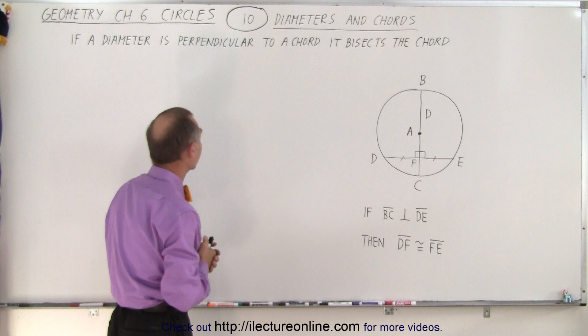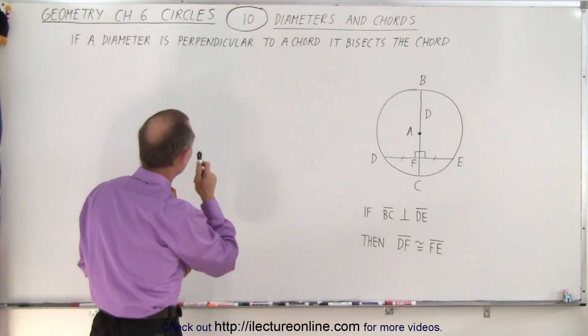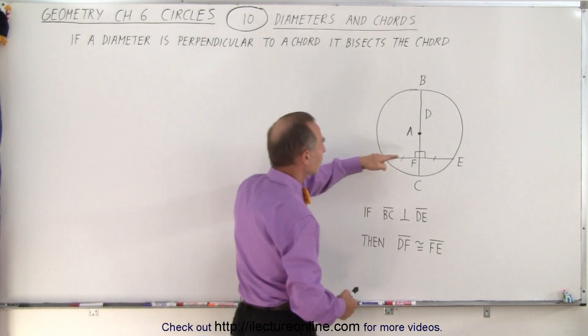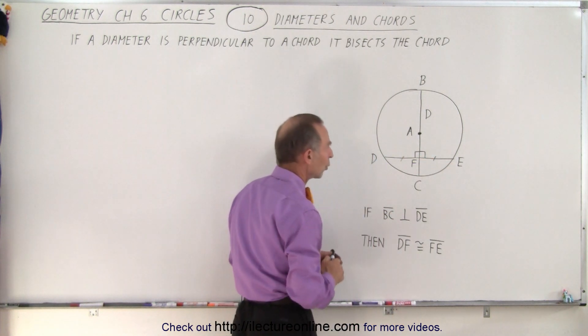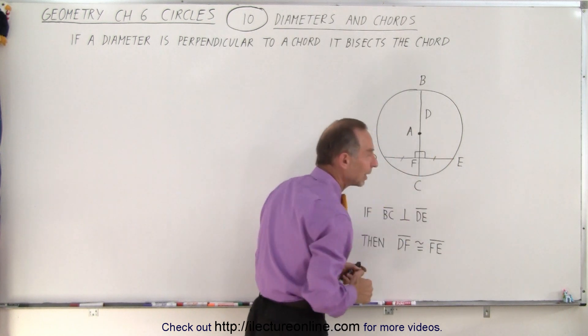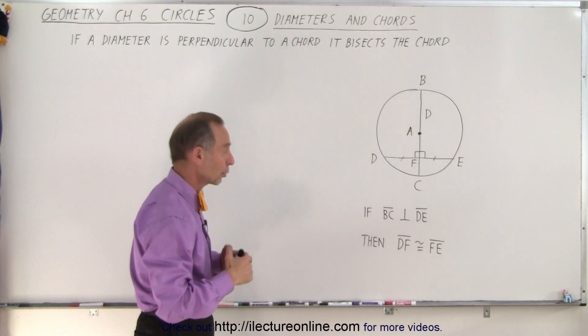And if that diameter is perpendicular to another chord, like the chord from D to E right here, then it bisects that chord. That means the two halves on both sides of the diameter must be equal in length - they are congruent.